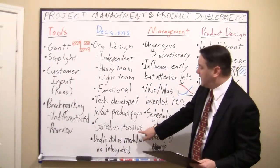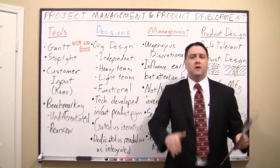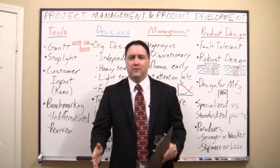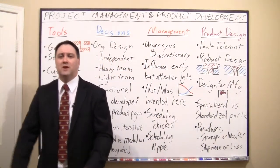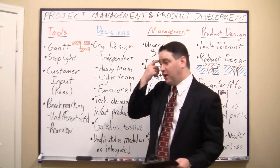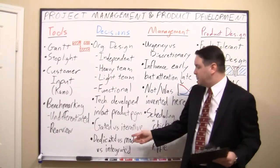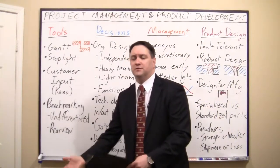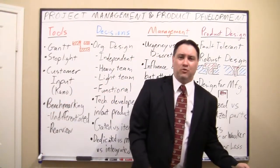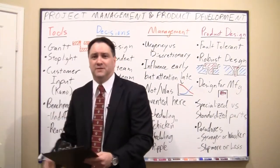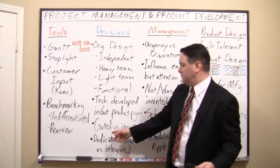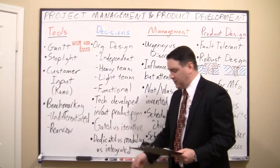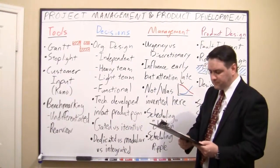The next decision is a gated process versus an iterative process. A gated process is highly sequential: design passes a gate, then you build prototypes, then tooling, then manufacturing. Software typically uses an iterative process — like beta testing, releasing to users, collecting crash reports, and patching. However, you can't use an iterative approach for airplanes; Boeing can't build planes, see why they crash, and fix them later. The more critical and life-safety-related a product is, the more a gated process is required.